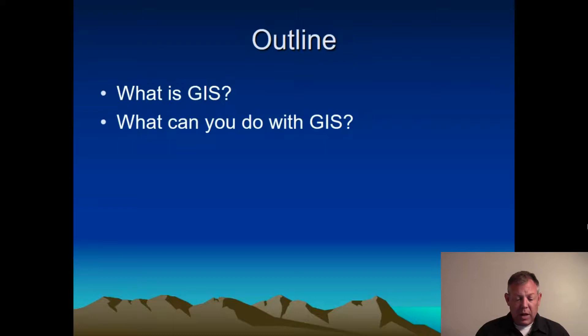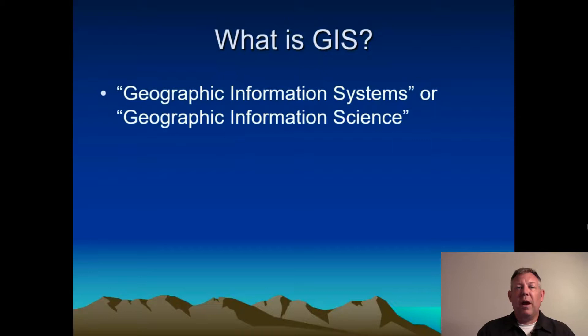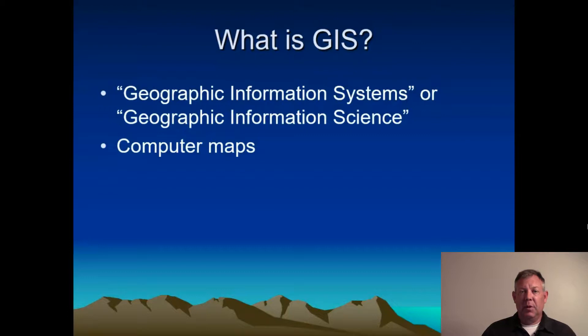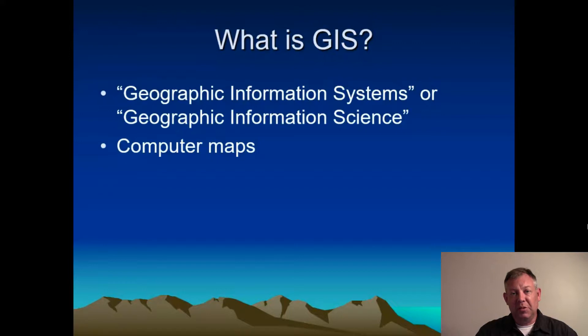In this first part we're going to talk about what GIS is, and then in the second part we're going to talk about some of the things we can do, just to give you an idea of what we're going to concentrate on. GIS stands for Geographic Information Systems, or Geographic Information Science. It's basically computer maps — taking data, putting it into the computer, and then using that data to make maps and to look at relationships.